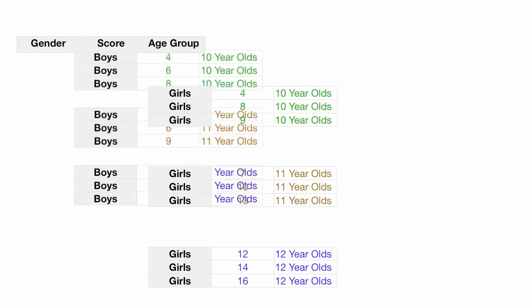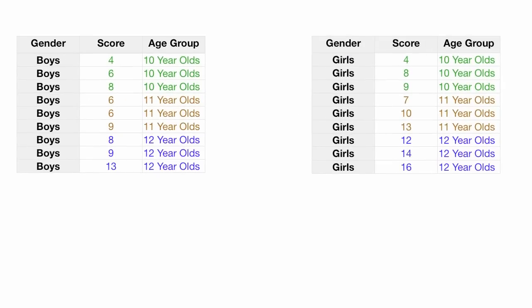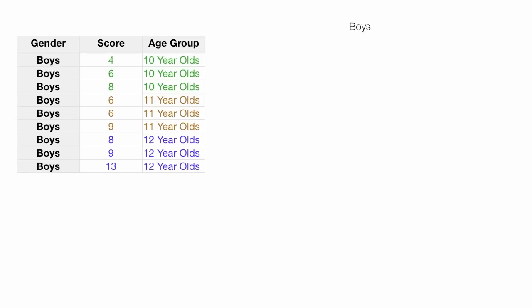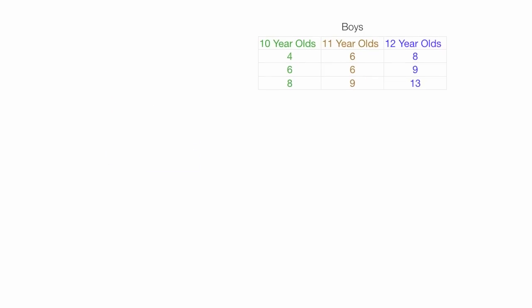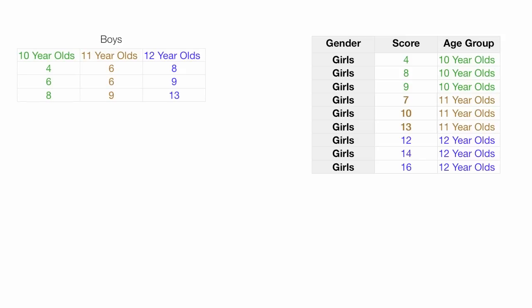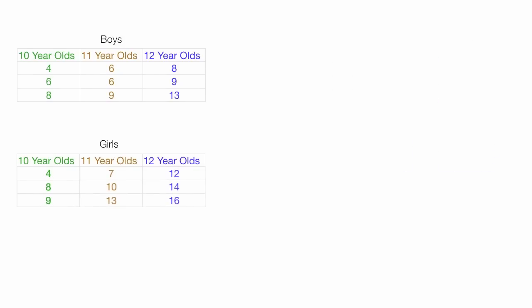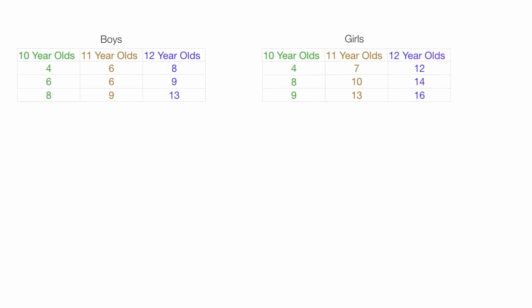The very first thing I do is organize the data into two groups: the boy group and the girl group. I take the boys' test scores and organize them by age groups — making one column for the 10-year-olds, and doing the same for the other two age groups. I do the same with the girls' data, organizing it by age group, so I have a column for the 10-year-olds, the 11-year-olds, and the 12-year-olds. I use those two tables to make a third table — my mean table — which is just a bunch of averages. It has three columns (10-year-old, 11-year-old, 12-year-old data) and two rows (boys and girls).